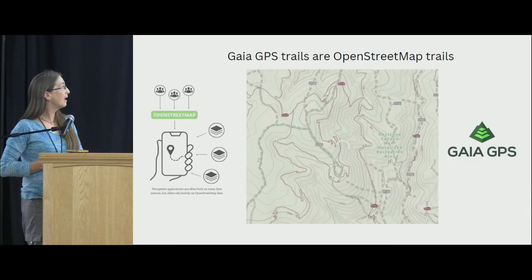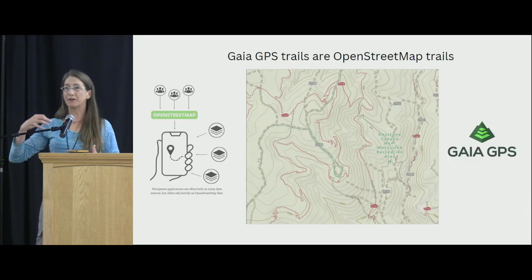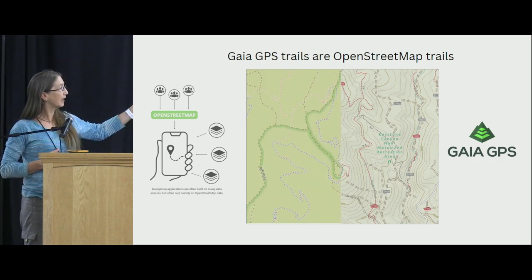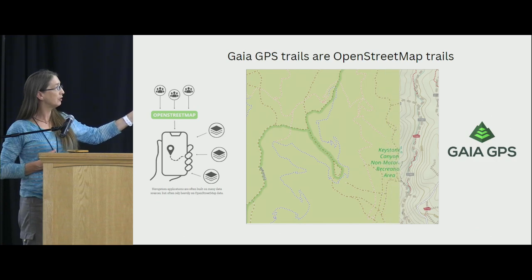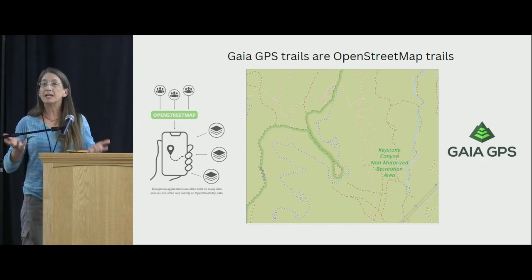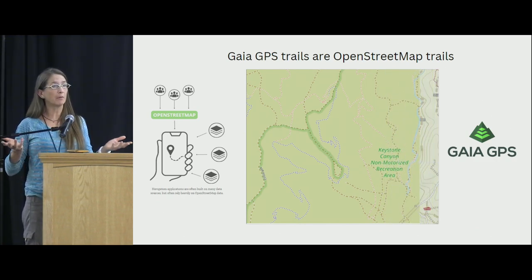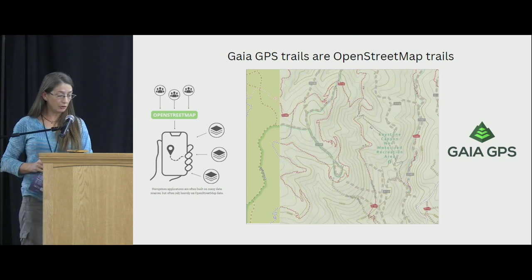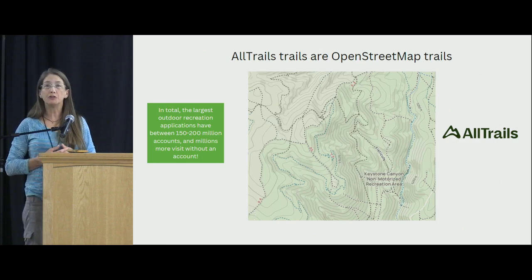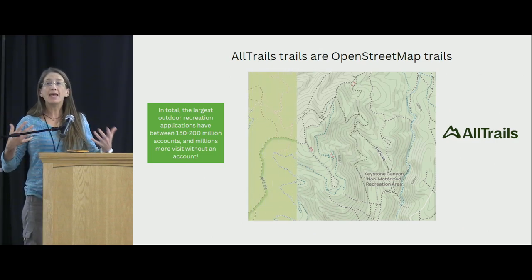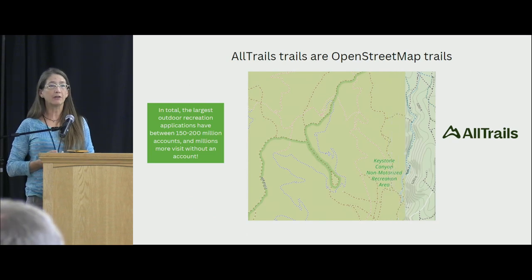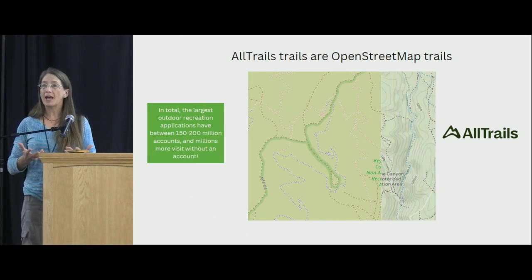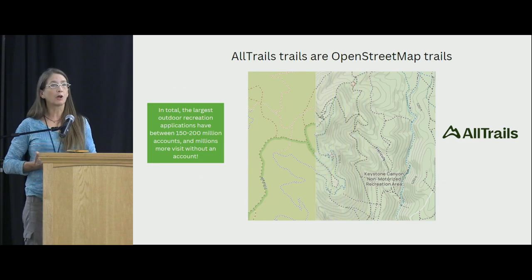We thought that was completely right — we needed to figure out what was going on. What's happening is that underneath various apps — here's an example from Gaia GPS — a lot of that source data is OpenStreetMap. The data that we contribute and create goes into Gaia; it also goes into AllTrails. They have a really tough job of trying to figure out how to render their information if we don't have enough information for them to work with.